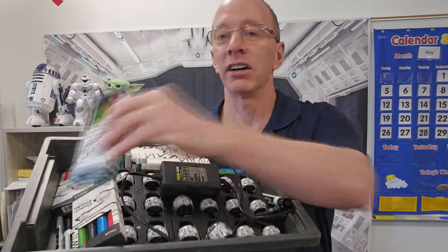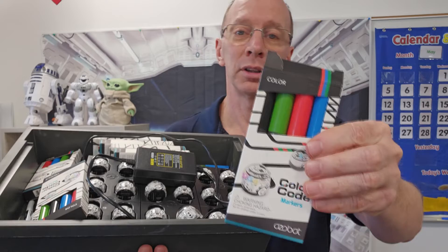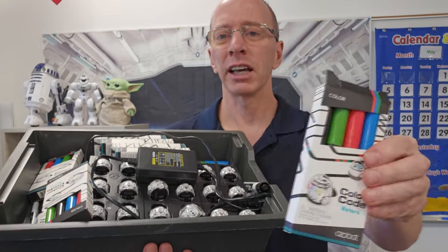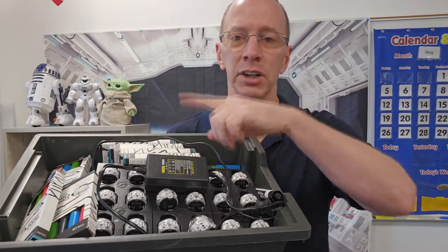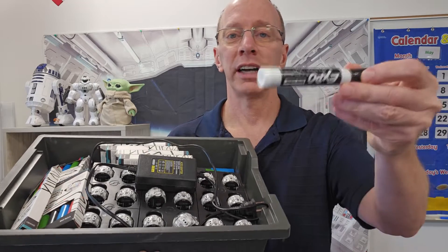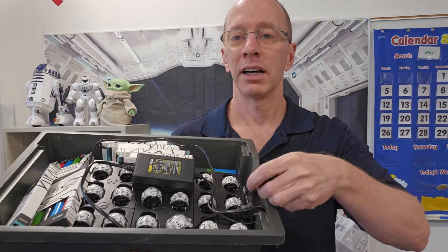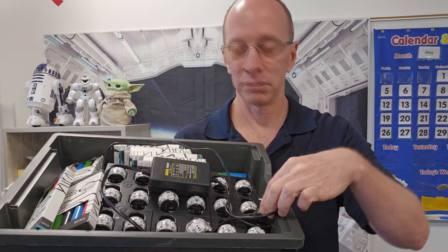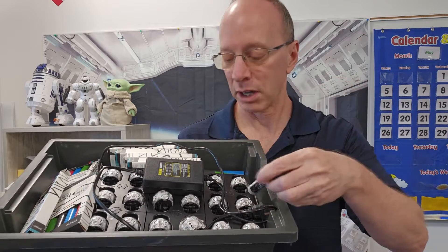You also get a set of markers. The markers are blue, green, red, and black. I use a lot of black to draw the lines on the paper, so I find just getting some Expo markers because I go through the black colors a lot. Works out great.